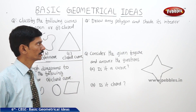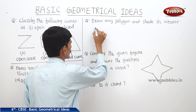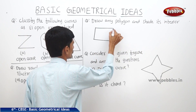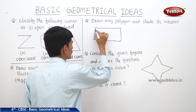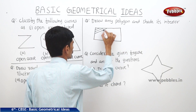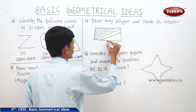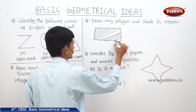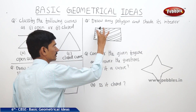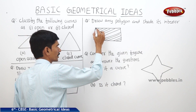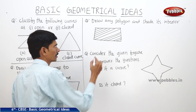The next question: draw any polygon and shade its interior. Let us draw a polygon with four sides and shade its interior. The interior together with its boundary is called the region — that is called the polygonal region.